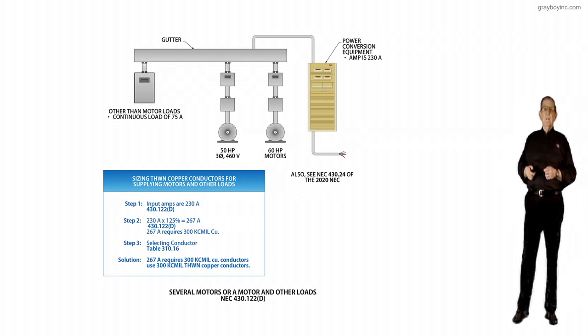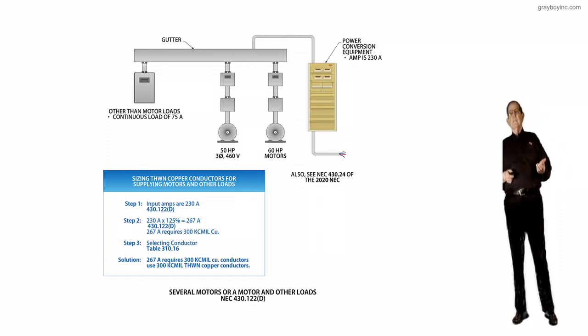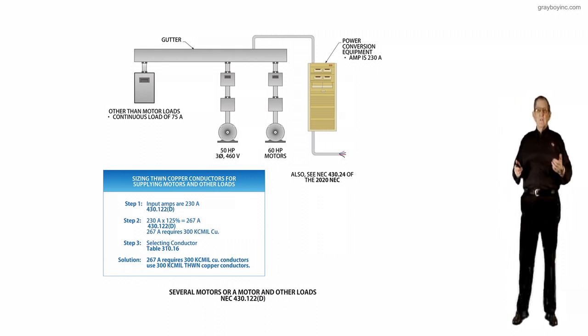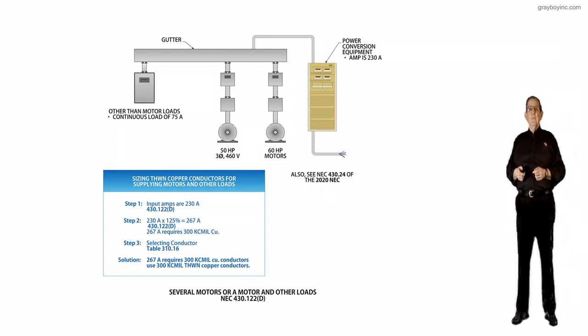we look at the boxed-in information and we're sizing THWN copper conductors for wiring motors and other loads. And we're using maybe a feeder going over there or we might be using a branch circuit under the branch circuit rule. But here we're looking at a feeder.